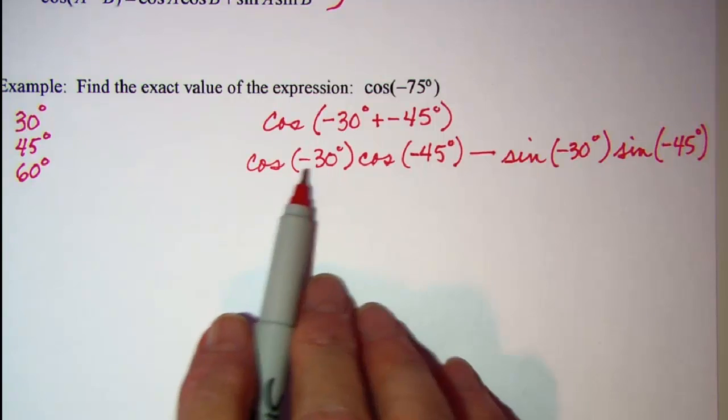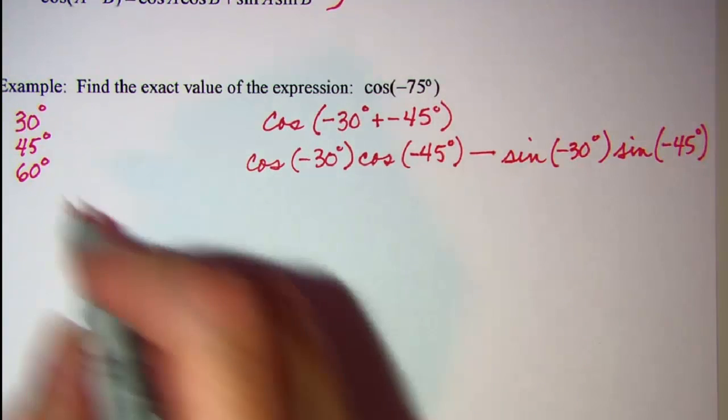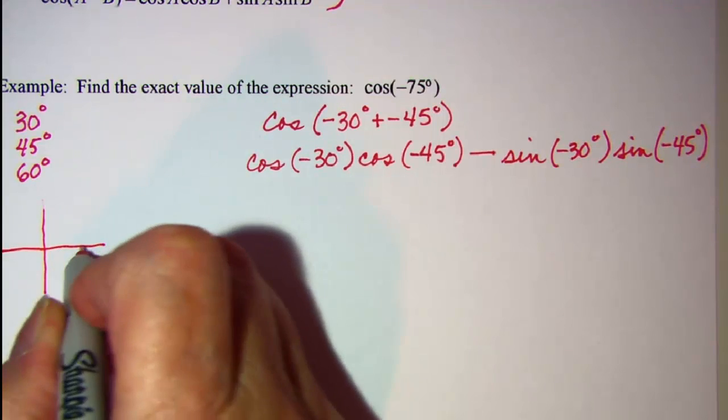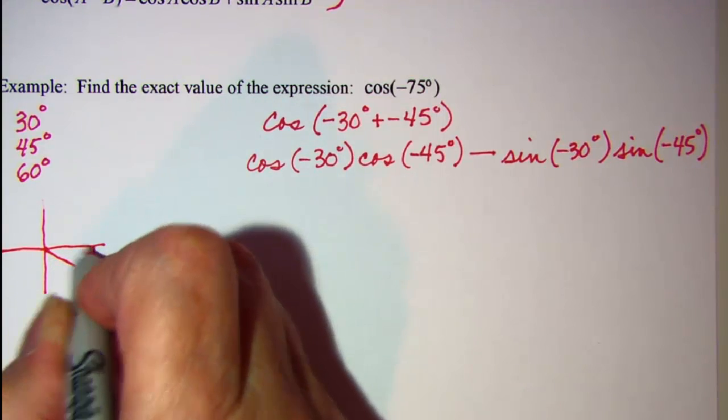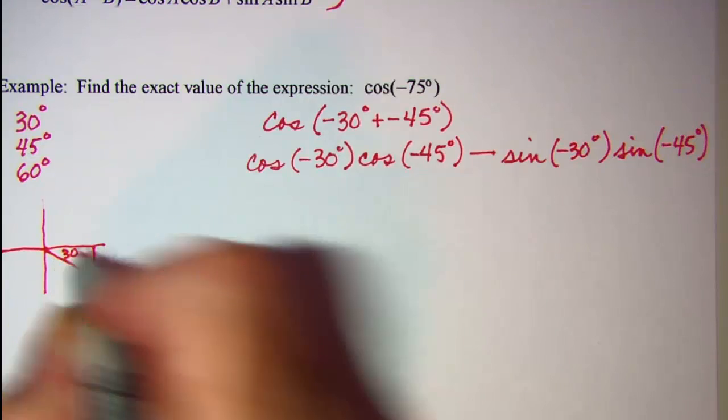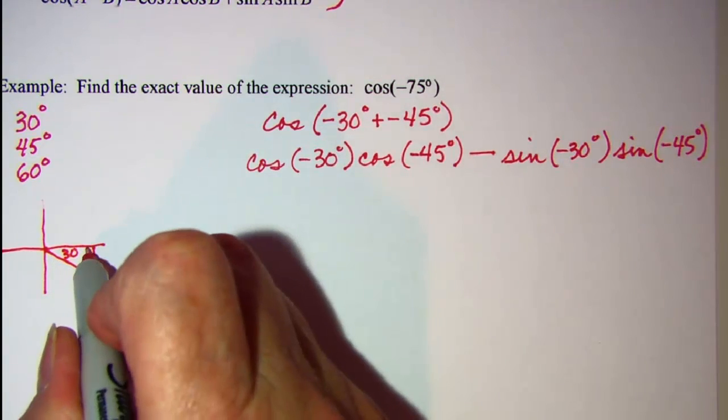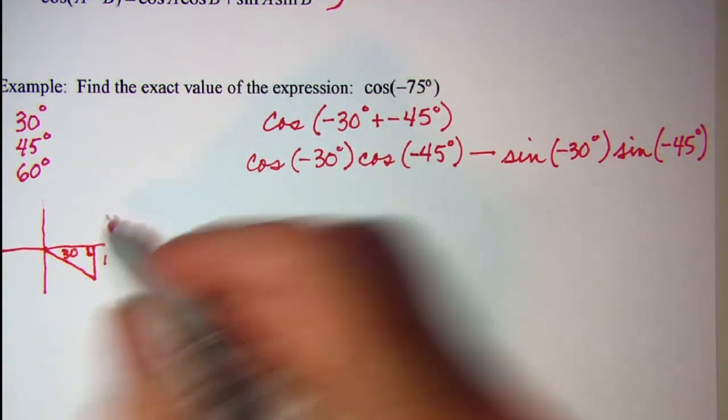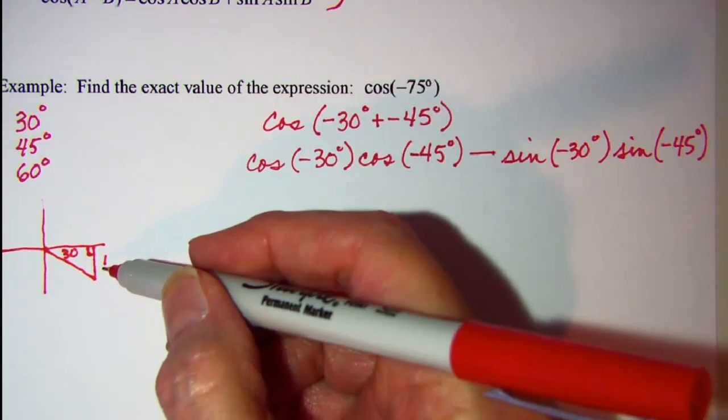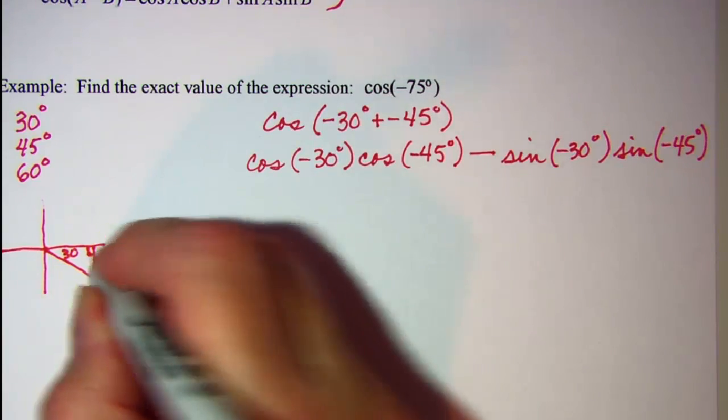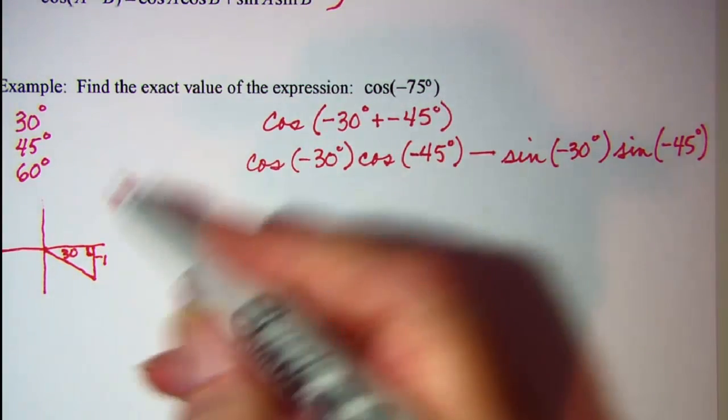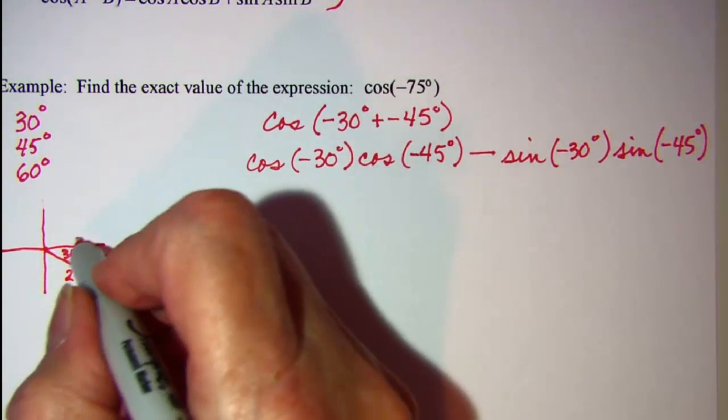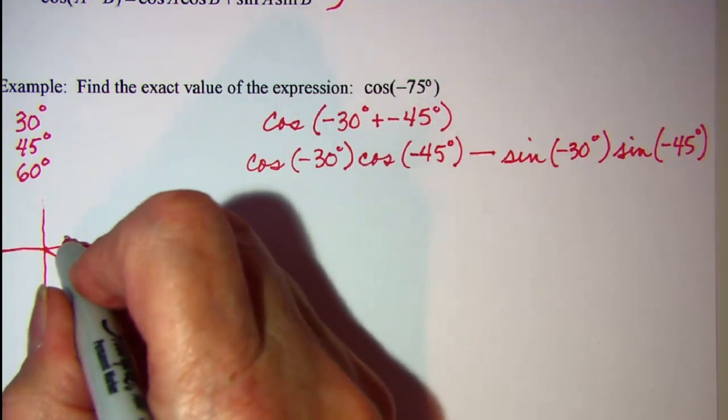Now I'll draw my reference triangles over here to the side. We want a triangle for negative 30 degrees, which will be down in quadrant 4. The side opposite the 30 is 1, but since that's below the x-axis, it will be a negative 1 that I'll use in my ratio. And then the hypotenuse is 2, and the side opposite the 60 will be a root 3.